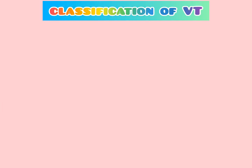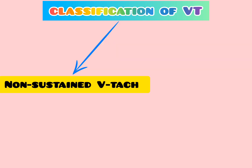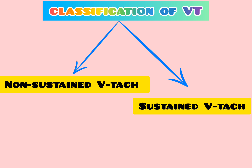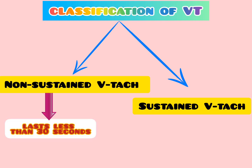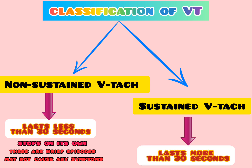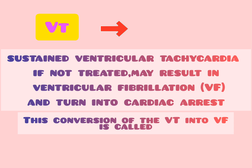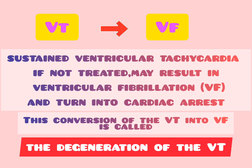V-T is classified according to how long an episode lasts. Non-sustained V-TAC lasts less than 30 seconds and stops on its own — these brief episodes may not cause any symptoms. Sustained V-TAC lasts more than 30 seconds and, if not treated, may result in ventricular fibrillation and turn into cardiac arrest. This conversion of V-T into V-F is called the degeneration of V-T.